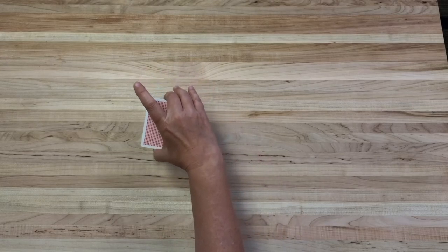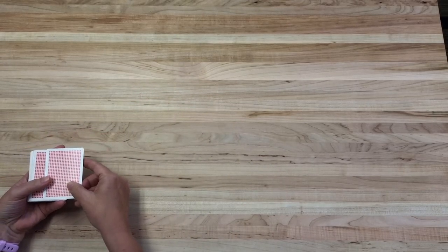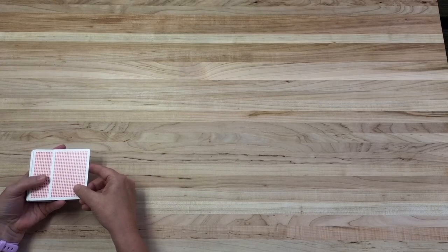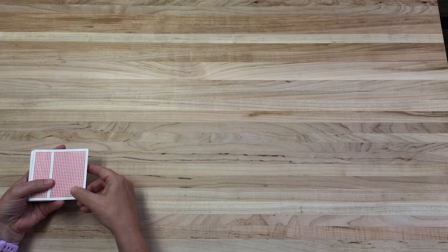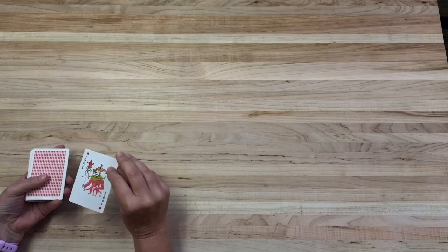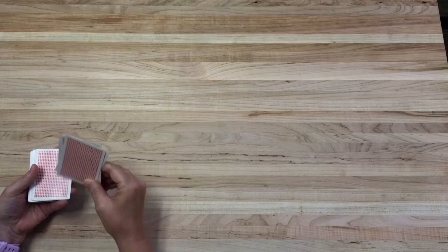So you just need a regular playing deck and you need to determine what's going to represent your one and what's going to represent your zero—your two different binary states. I usually like to have the back of the card be one and then the front of the card, regardless of what is there, is going to represent a zero.